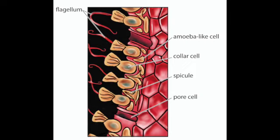And then you have collar cells. Collar cells have tiny hairs that trap particles, such as bacteria and food particles. The tiny flagellum whips the water and keeps it moving through the central cavity. Once the food is trapped, the collar cells will digest it.